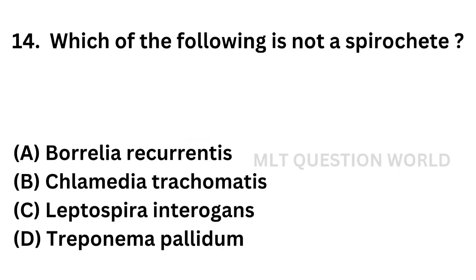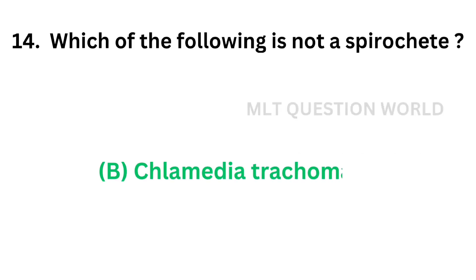Question number fourteen: Which of the following is not a spirochete? Option A: Borrelia recurrentis, Option B: Chlamydia trachomatis, Option C: Leptospira interrogans, Option D: Treponema pallidum. The correct answer is Option B — Chlamydia trachomatis. Chlamydia trachomatis is not a spirochete.